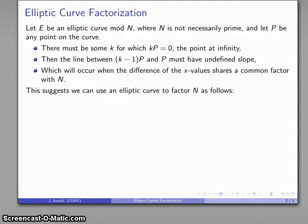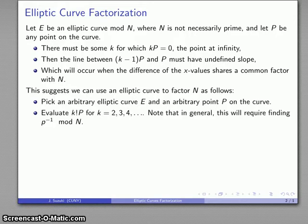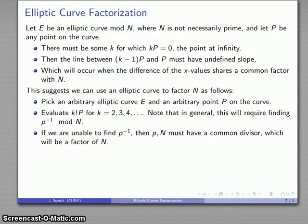This suggests the following method of factoring using elliptic curves. I'll pick an arbitrary elliptic curve and any point on the curve. I'll evaluate k!P for k equals 2, 3, 4, and so on. In general, if I want to evaluate k!P, I'm going to have to find the multiplicative inverse of a number mod N, because at some point I'll have to calculate the slope between two points, which means I'll have to divide. Now if I can't find that multiplicative inverse, then that means the number I'm working with and my modulus have to have a common divisor, which will be one of our factors.